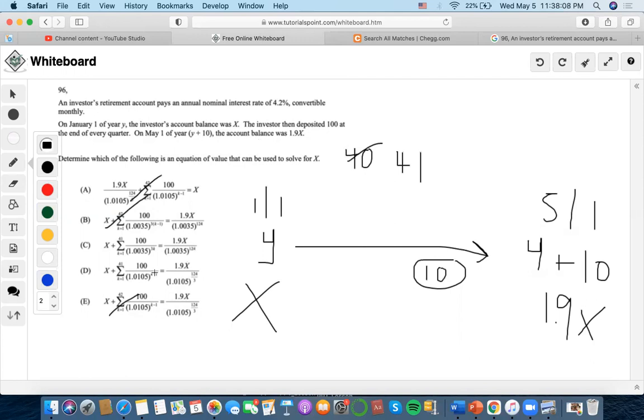But now they have different interest rates, so let's look at what they're giving us here. So it says 4.2% convertible monthly, which is 0.35%, right? So if I were to do 1.0035, I would want to convert it to the 12th, I would want to convert it to quarterly. So I'm going to make it equal 1 plus J to the 4.